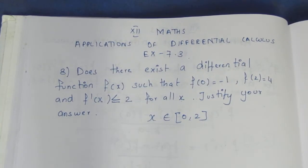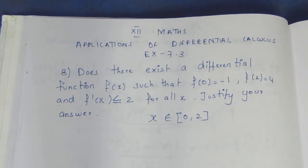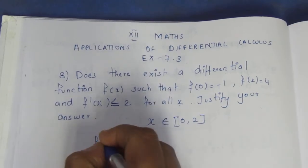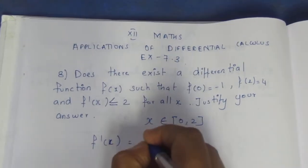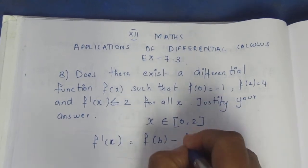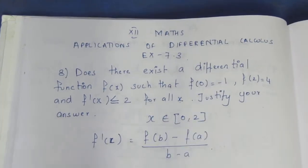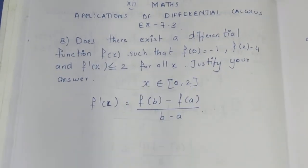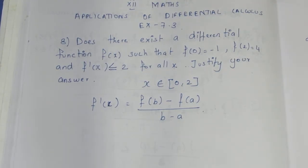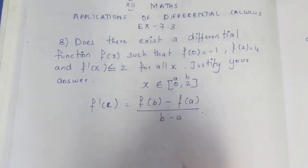We know that by the Mean Value Theorem, f'(c) = [f(b) - f(a)] / (b - a). It is a formula. The interval is a and b, initial and final. So initial is a, final is b, and we substitute.